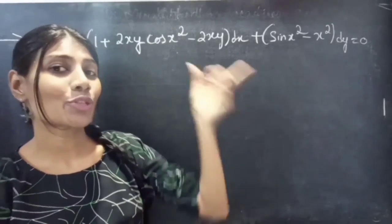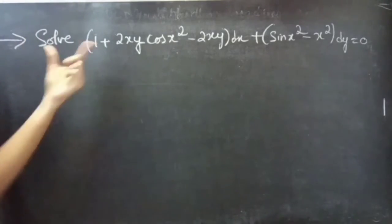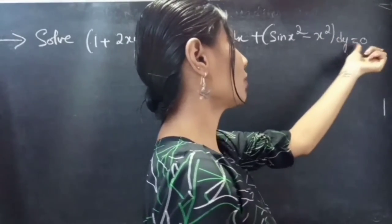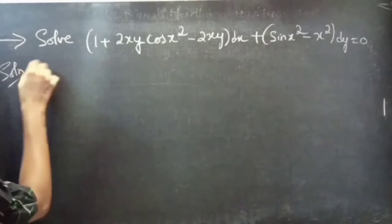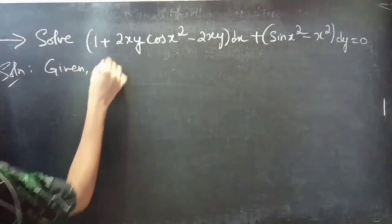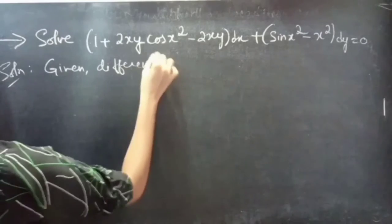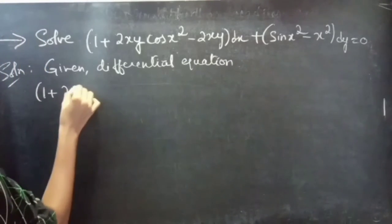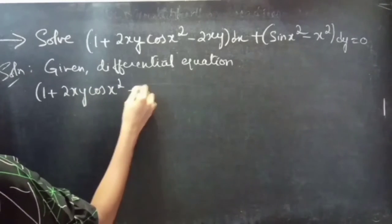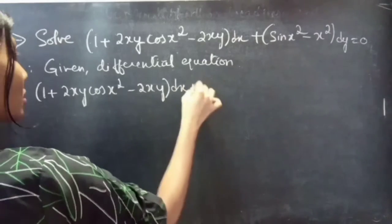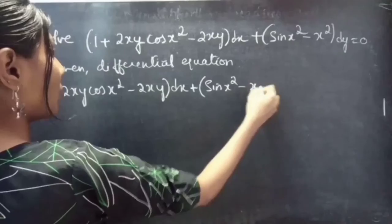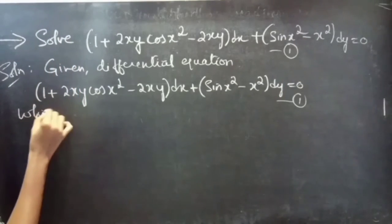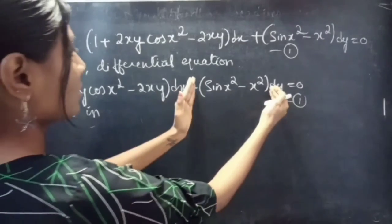Hello everyone, this is Kalpana. In this video we are going to solve this differential equation. The problem: solve (1 + 2xy)cos(x²) - 2xy dx + (sin(x²) - x²) dy = 0. This is equation 1, which is in the form M dx + N dy = 0.